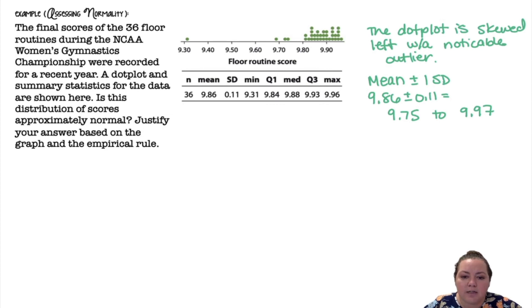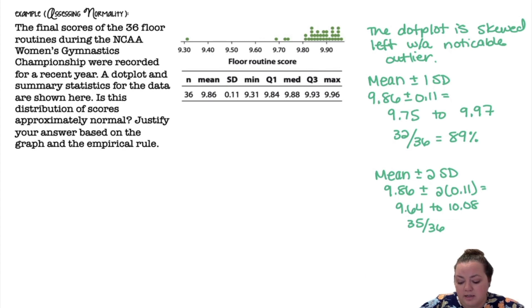So then I'm looking at my dots and how many dots do I have that are between 9.75 and 9.97. So if I count the dots on the dot plot, I have 32 out of the 36 dots that fall into that window of 9.75 to 9.97, which is 89%, which is not very close to 68%. And then I'm going to check again for two standard deviations. So the mean plus two times my standard deviations gives me 9.64 to 10.08, which is 35 out of the 36, which is 97.2, just getting closer to 95%, but it's still not super close.